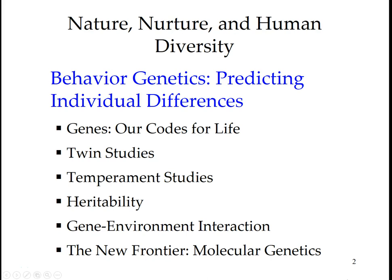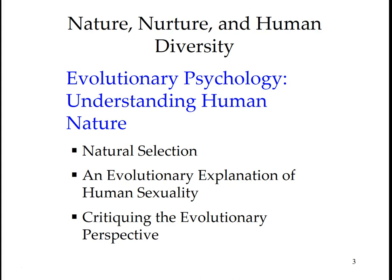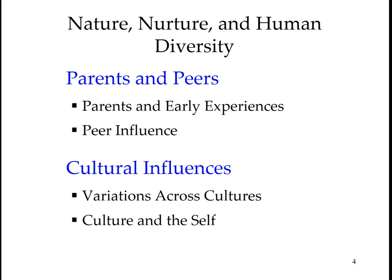Behavior geneticists explore individual differences. By using twin, adoption, and temperament studies, they assess the heritability of various traits and disorders. Their research indicates that both nature and nurture influence our life courses. We are products of interactions between our genetic predispositions and our surrounding environments. Molecular geneticists search for genes that put people at risk for genetically influenced disorders. Evolutionary psychologists focus on what makes us alike as humans. They study how natural selection favored behavioral tendencies that contributed to survival and the spread of genes. Critics maintain that evolutionary psychologists make too many hindsight explanations and underestimate the role of culture.